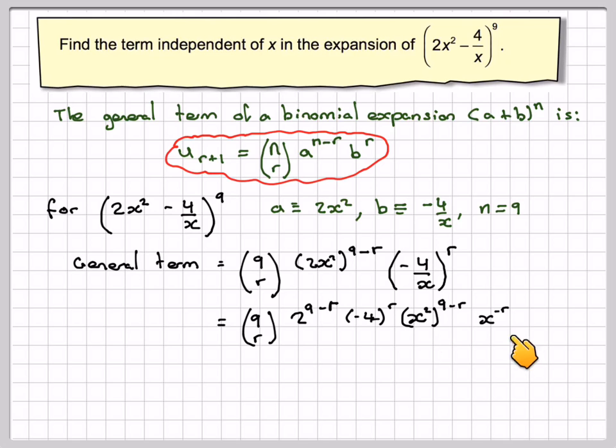Right, we're going to combine these two here now, so the first bit will be the same. If we combine these two, 2 times 9, which is 18 minus 2r minus r, so it becomes 18 minus 3r, and that will become x to the power of 18 minus 3r.